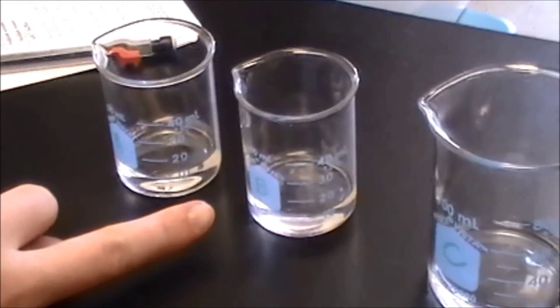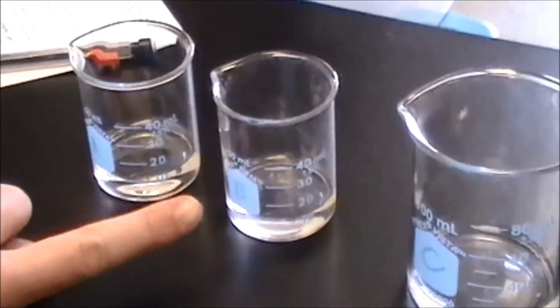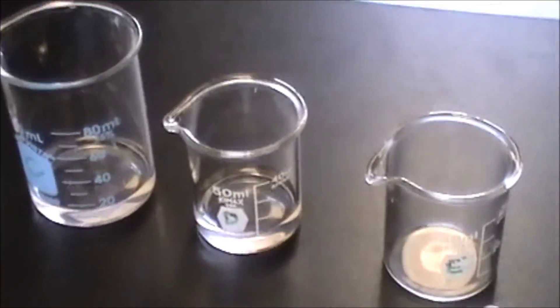So in here, in beaker A, we have 10 milliliters of distilled water. In beaker B, we have 6.7 milliliters of acetic acid and then 3.3 milliliters of sodium acetate. And then the rest of them, the ratios change.